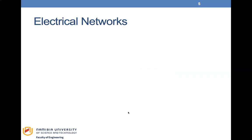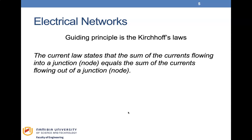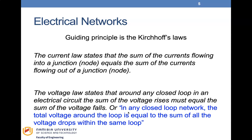Let's consider electrical networks and their components. The guiding principle is Kirchhoff's laws, of which there are two. The current law states that the sum of the currents flowing into a junction equals the sum of the currents flowing out. The voltage law states that around any closed loop, the sum of voltage rises must equal the sum of voltage falls, or equivalently, the total voltage around the loop equals the sum of all voltage drops within that loop.